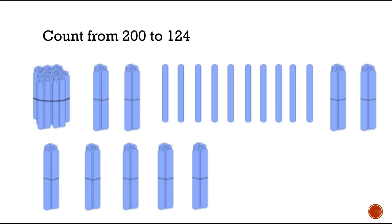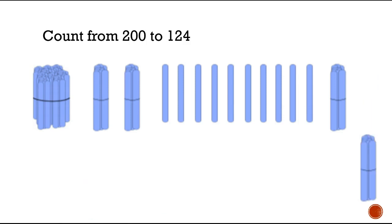Looks like we have another challenge here. Now we have to count backwards from 200 to 124. We can do that by taking away some straws. Let's start by taking away these bundles of 10. We've got 200 here: 190, 180, 170, 160, 150, 140, 130. Now we need to start taking away ones because we need to get to 124.